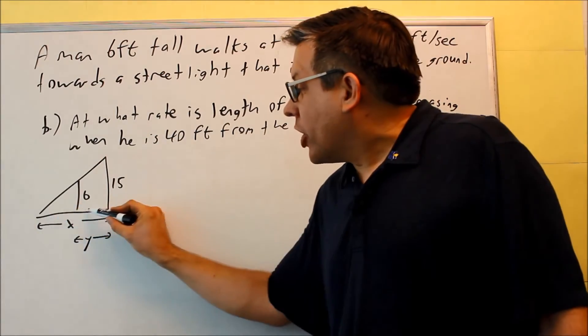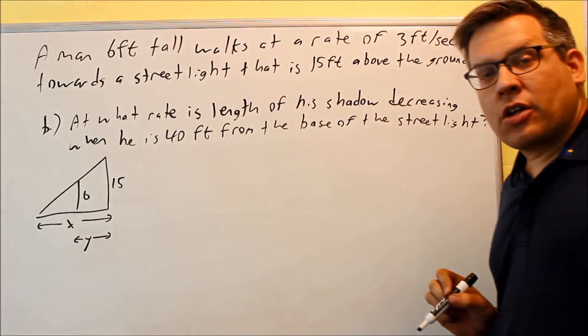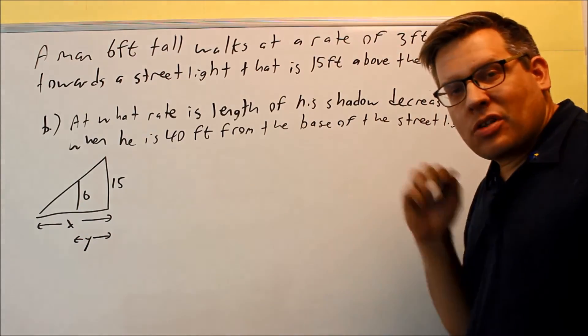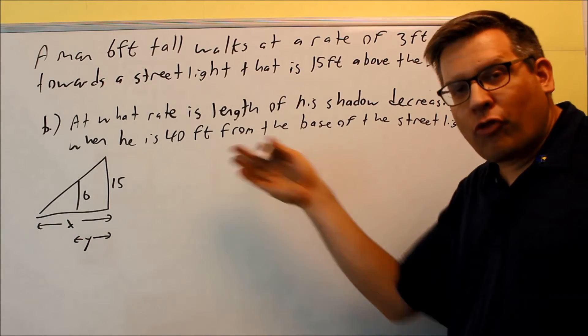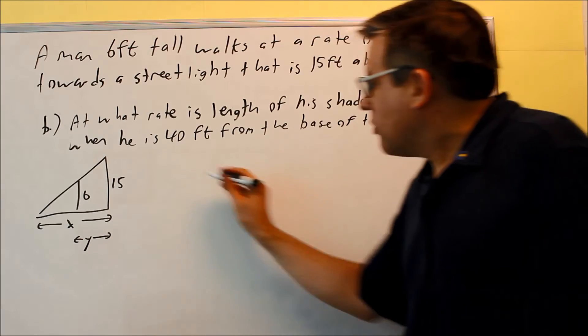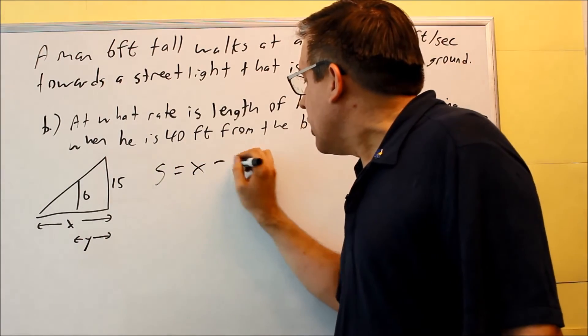We didn't have any variables set up for the length of the man's shadow. When we set it up with similar triangles, we just simply used x minus y. But this time, we need to actually come up with a formula that has a variable assigned to the length of the shadow. We're going to use s for this.